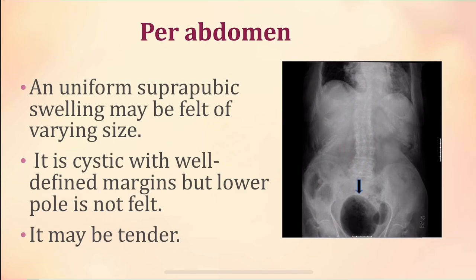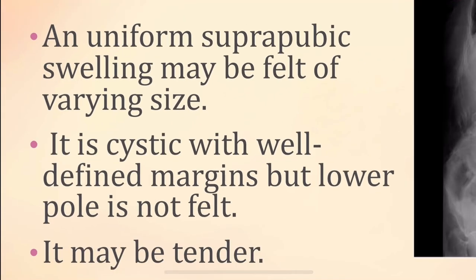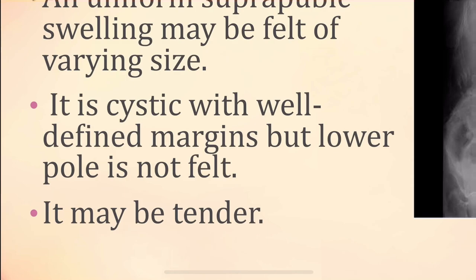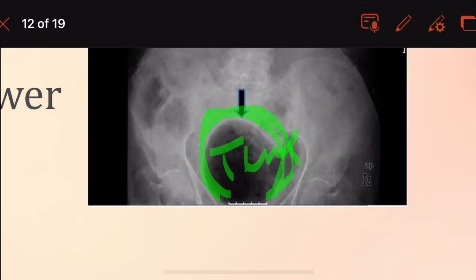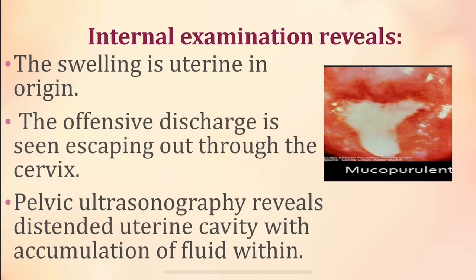On per abdomen examination, you can observe suprapubic swelling, which can be felt of a varying size. The swelling is cystic, has a well-defined margin, the lower pole of the uterus is not felt, and the swelling is tender. On internal examination, the swelling is uterine in origin — the uterine cavity is being distended. The offensive discharge is seen escaping out through the cervix; on examination, you can see the pus escaping out of the cervical os.